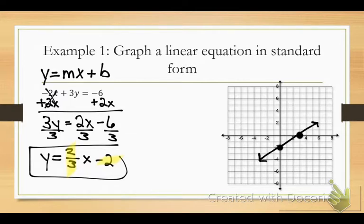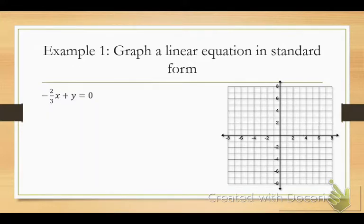I graphed the linear equation that was originally written in standard form. Now we're going to do one more on the same graph. It's written in standard form — ax plus by equals c — but we have to get it in slope-intercept form, so we have to get y by itself.